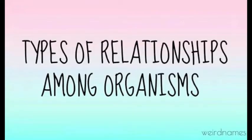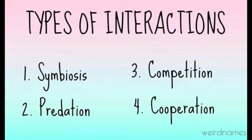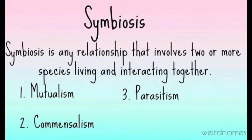Now let's move on to the types of relationships among organisms. There are four types of interactions: symbiosis, predation, competition, and cooperation. Symbiosis is any relationship that involves two or more species living and interacting together. The types of symbiosis are mutualism, commensalism, and parasitism.